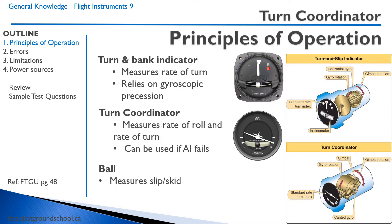As the aircraft turns, the gyroscope precesses and moves the needle either to the left or to the right. We also have a ball — both of these instruments have a ball at the bottom that indicates whether the turn is a slip or a skid.